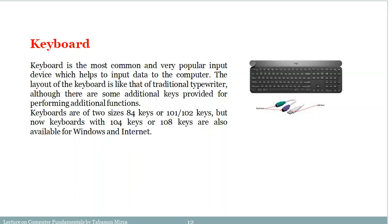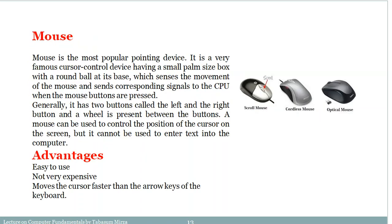The keyword for keyboard is alphanumeric input to the computer. Mouse is the most popular pointing device — a very famous cursor-controlling device. It has a small form-factor box with a round ball at the base. We also use optical mice, which detect the movement of the mouse and send corresponding signals to the CPU when the mouse buttons are pressed.